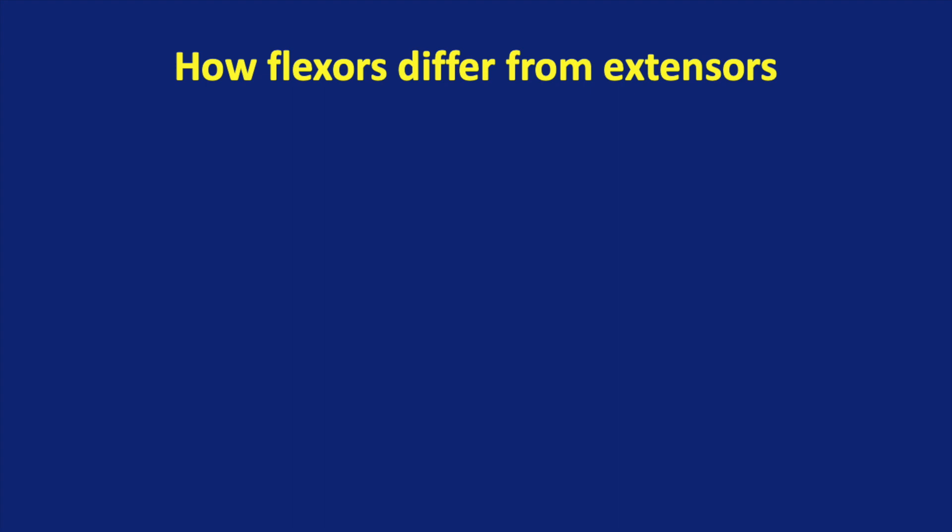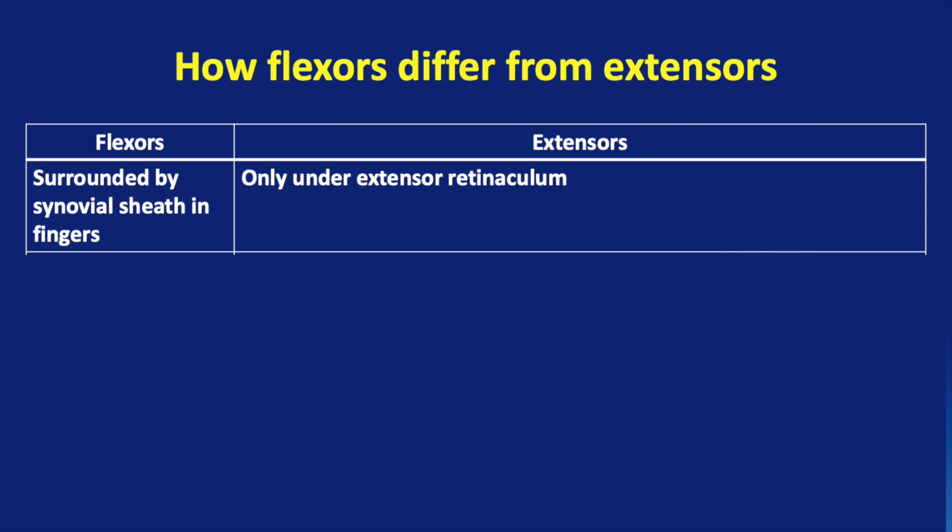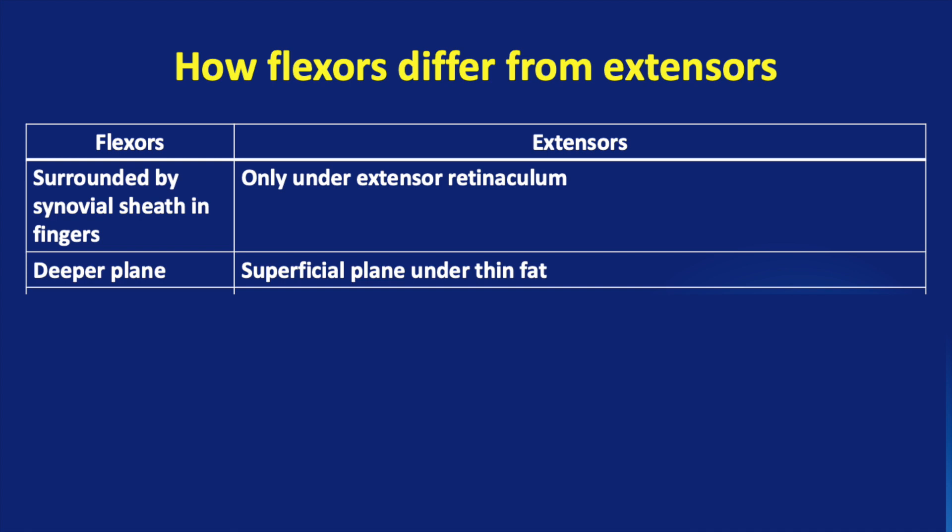Just knowing about how to do a flexor tendon repair may not help us in doing an extensor tendon repair because they differ from each other. The flexor tendons are surrounded by a synovial sheath in the fingers, but the extensors have a synovial covering only under the extensor retinaculum. The flexor tendons are in a deeper plane, protected by palmar fat, whereas the extensor tendons usually lie in a superficial plane under a thin layer of fat. The extensor tendons have a reduced size compared with the flexors, and their lack of collagen bundle linkage reduces the grip strength available for the suture material to hold on.